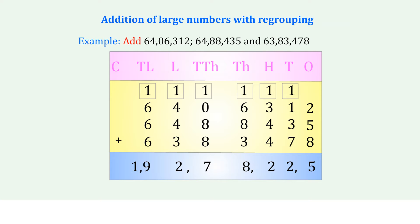Adding all four lines, we get: 1, 9, 2, 7, 8, 2, 2, 5 as the final sum.